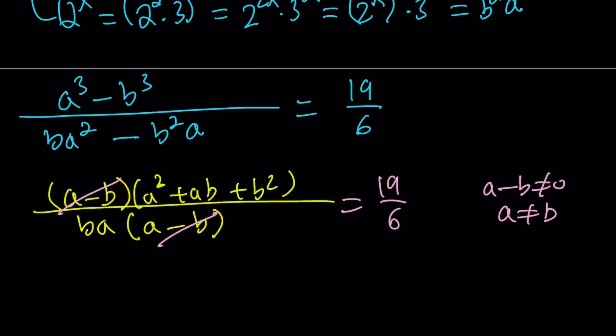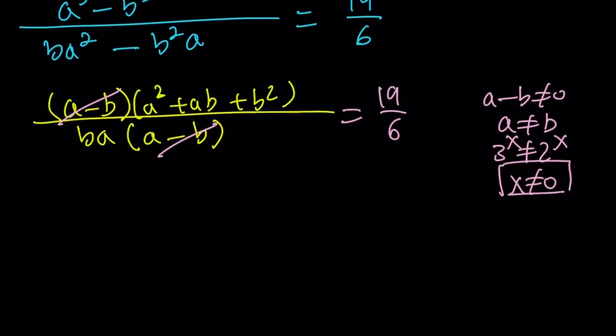And remember, a and b, 3 to the x does not equal 2 to the x, which means x does not equal 0. So at the end, if we end up getting a 0, we're not going to accept it. Alright. So let's make sure we establish that. And now let's solve the resulting equation, which is quadratic, by the way.